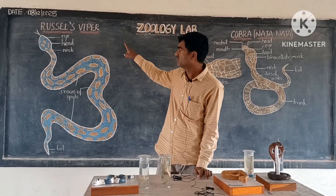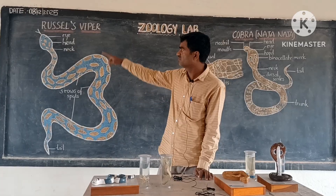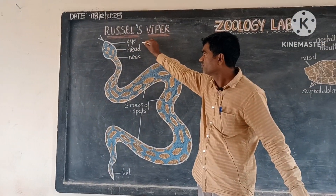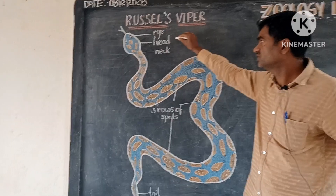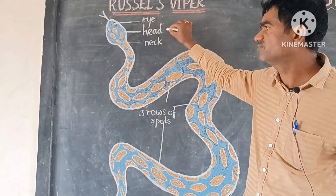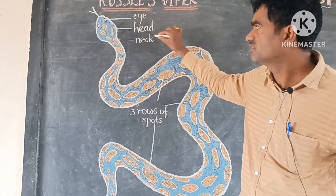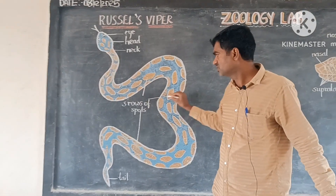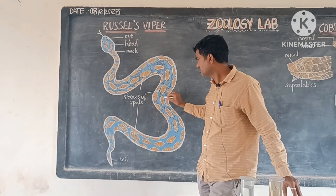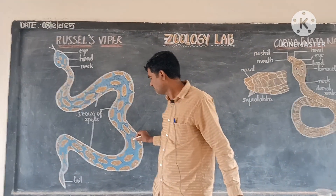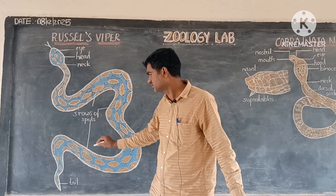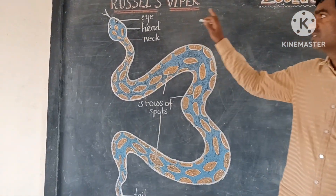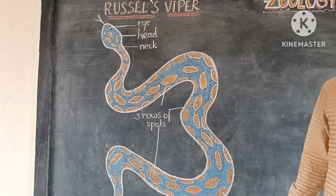This is the diagram of Russell's Viper. Anterior region — this is the eye, a pair of eyes are present. This is the head region and this is the neck region. These are the three rows of spots: one, two, three — three rows of spots are present. And in the posterior region, the tail is present. This is the Russell's Viper diagram.